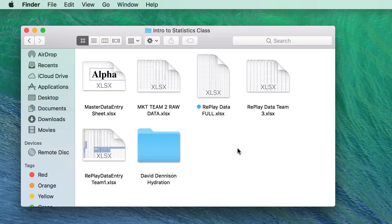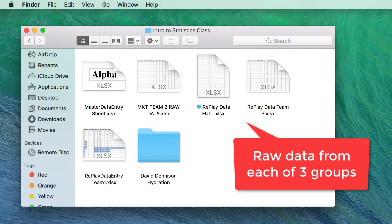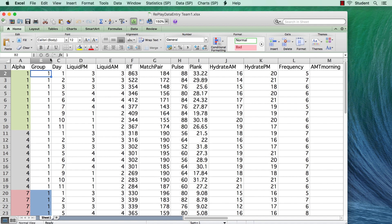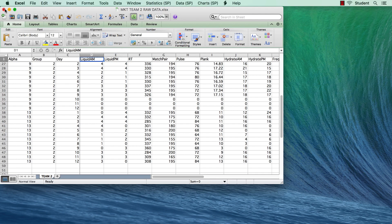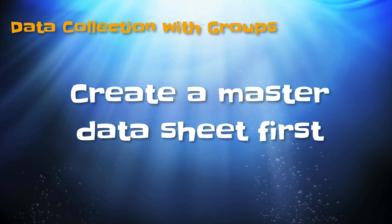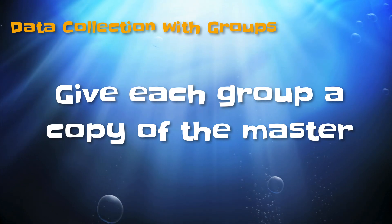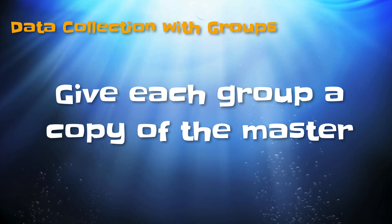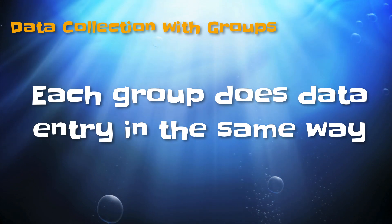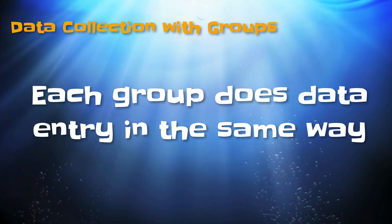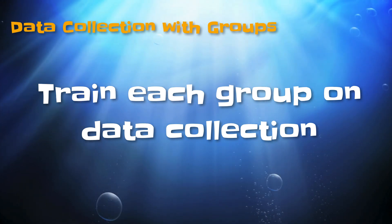We actually divided the class into three groups, and they each provided their data on their own Excel spreadsheet. Whenever you have multiple people providing data on multiple worksheets, it is absolutely imperative that you create the Excel spreadsheet with all of the variables first. Then you distribute exact copies of that Excel workbook to each group. Once they have their copy, it's imperative that everyone enter their data exactly the same way — we actually did a class session on how to record the data properly so that everyone was recording it in exactly the same way.